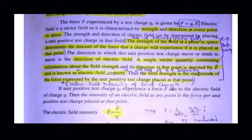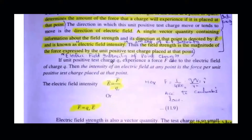The direction of the electric field is the direction in which a unit positive charge will move. This determines the direction of the electric field. A single vector quantity that gives us information about both the strength and direction of the electric field is known as electric field intensity.